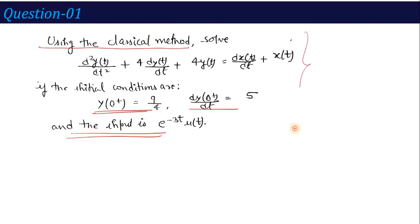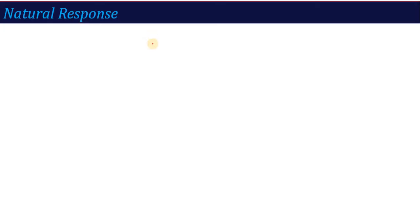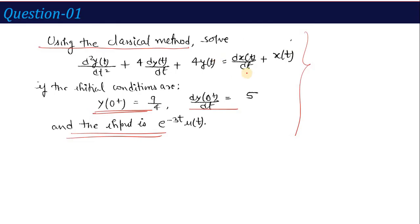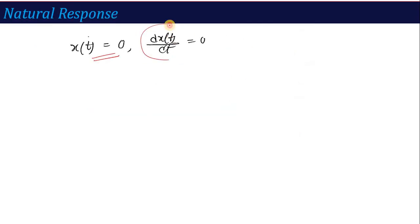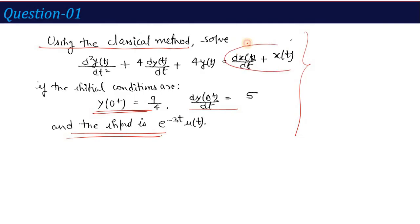Step by step, just as we saw in the last lecture, I am going to calculate the natural response. For the natural response, the input x(t) is equal to 0, and the derivative of x(t) is also 0. Now, if these two values are 0 in the equation, what does the equation become?